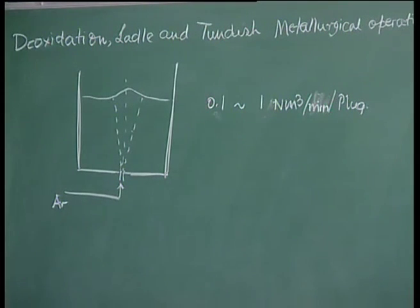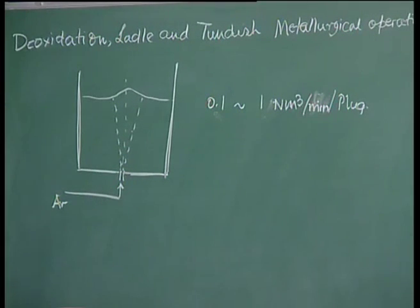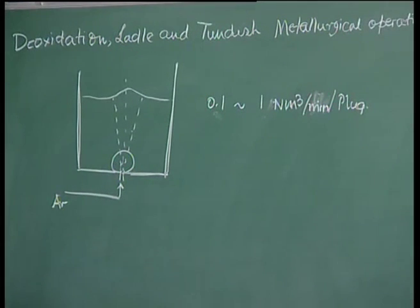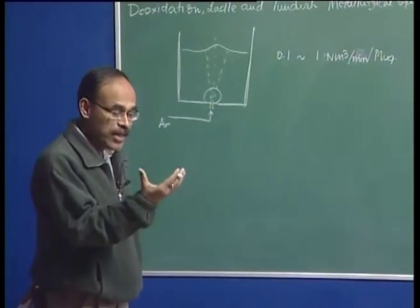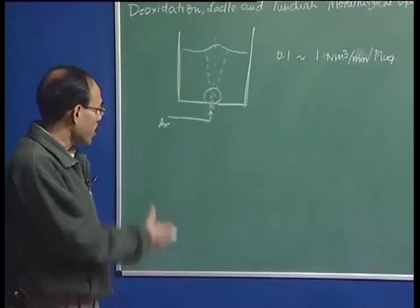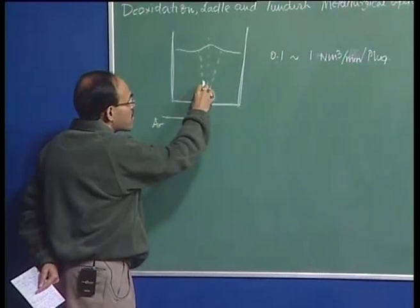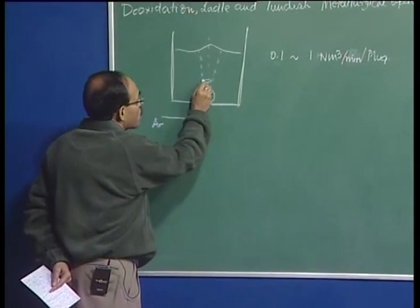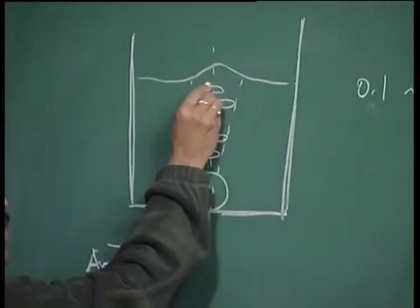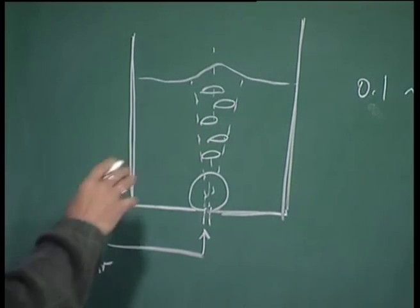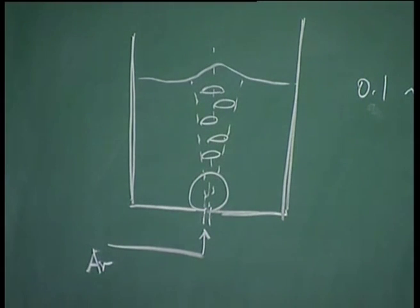Under ladle metallurgy gas injection operation, when we inject argon gas through a nozzle, typically a big gas envelope forms in the vicinity of the nozzle. This gas envelope is typically hydrodynamically unstable — the fluid cannot really sustain that big a gas envelope. So, immediately above the gas injection nozzle, this big gas envelope typically devolves into a spectrum of spherical cap bubbles, which then rise due to their buoyancy and escape to the surrounding.